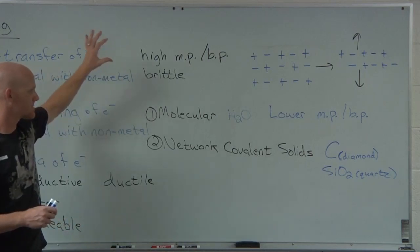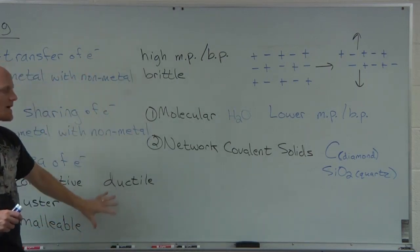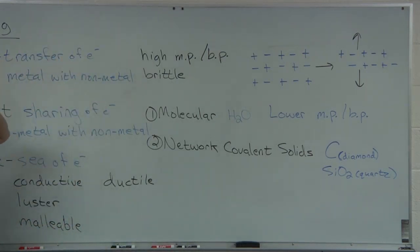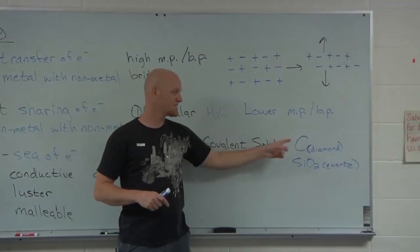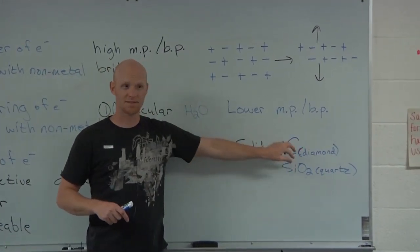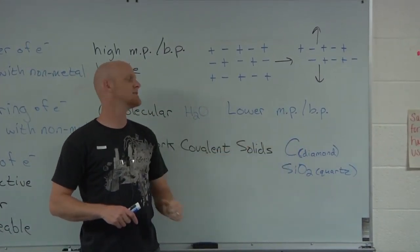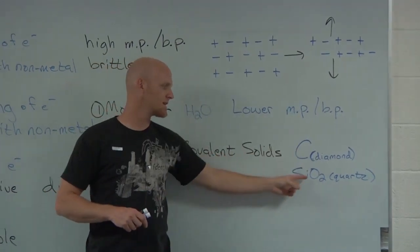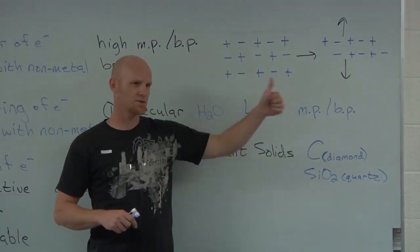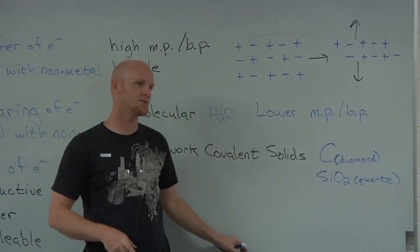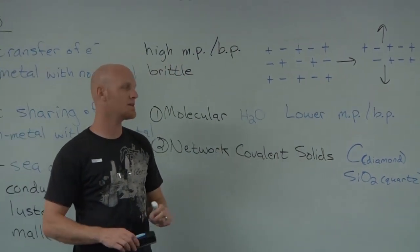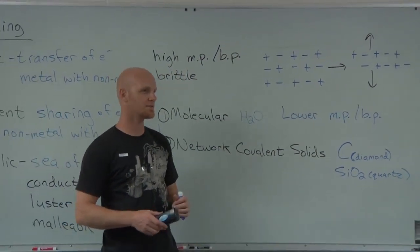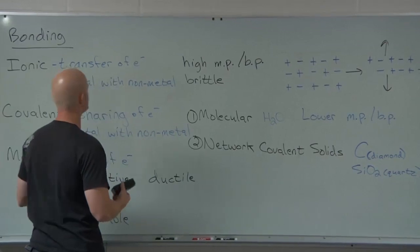Any questions on the three different types of compounds and the characteristics of each? By the way, network covalent solids — diamond and quartz, carbon and silicon dioxide — those are your two common examples. Memorize that. There are a couple of other examples out there, but those are the ones worth knowing.